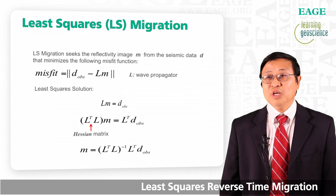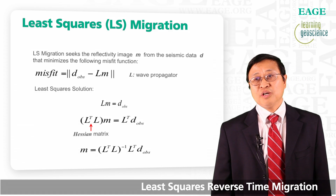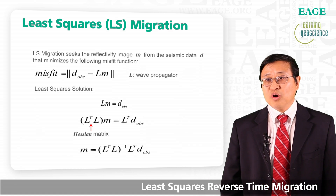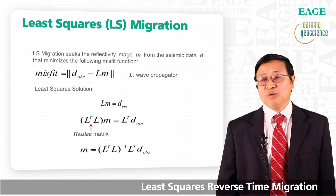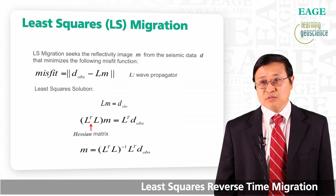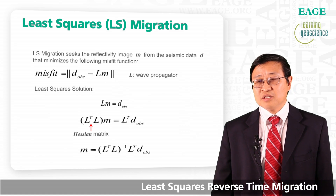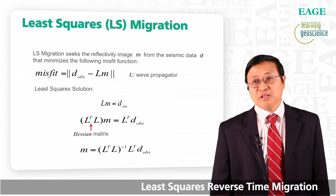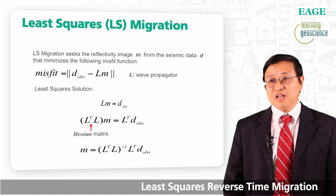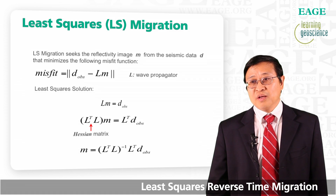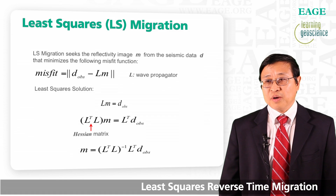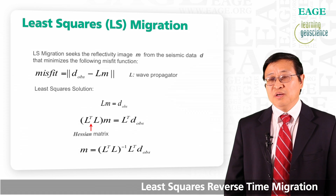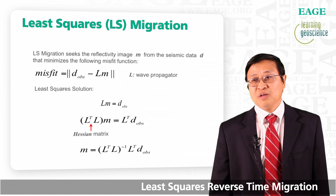Least squares RTM is a special form of least squares migration. In mathematical terms, least squares migration tries to find the reflectivity image M from seismic data D, which minimizes the following misfit function. Here D is observed seismic data, and LM is modeled seismic data, where L is the wave propagator. To get the least squares solution, first we need to set up a linear system in matrix form, then multiply both sides by L-transpose. On the left side you have the Hessian matrix. Performing the inverse of this Hessian matrix, you get the least squares solution.